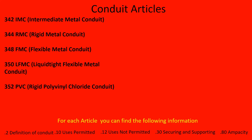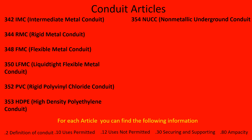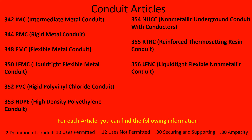Article 352 is rigid PVC, polyvinyl chloride — your schedule 40s and schedule 80s. 353 is HDPE, high density polyethylene conduit. 354 is NUCC, non-metallic underground conduit with conductors — it has the conductors inside of it, so that's one that may have a dot 80 section. 355 is RTRC, reinforced thermosetting resin conduit. 356 is LFNC, liquid tight flexible non-metallic conduit — that's what we call CarFlex.